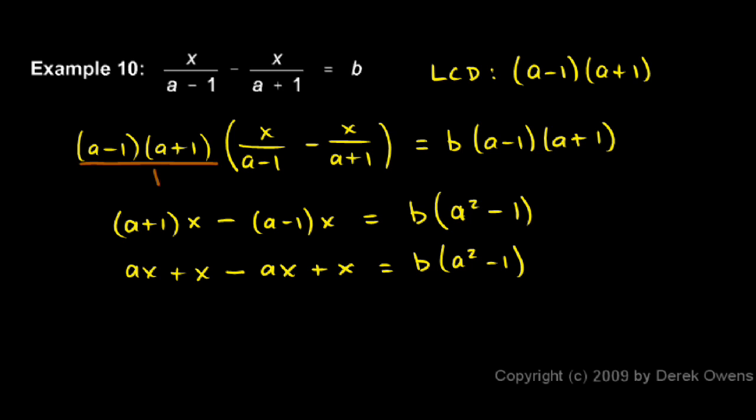Now on the left, the ax terms cancel out and I'm left with 2x. So 2x equals b times (a squared minus 1), and then I simply divide by 2 on both sides. The 2's cancel, and that's my answer: x equals b(a squared minus 1) over 2.